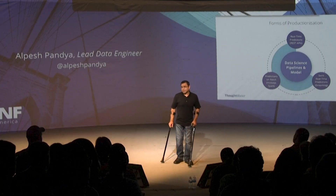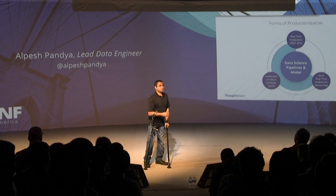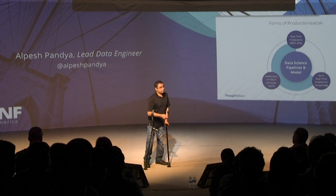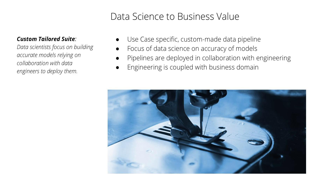There are two different approaches - I'll talk about extremes and the gray areas as well. The first approach I call the custom tailored suit: when you go to a tailor, you give measurements and they create a unique custom-made suit. Many teams follow this approach where data scientists build the model they think is accurate and efficient, then collaborate with data engineers to bring it to production.